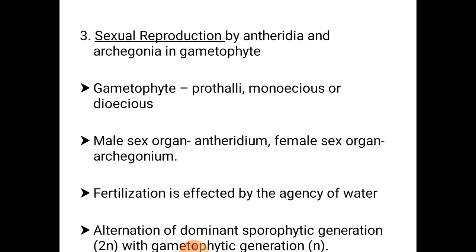Fertilization is effected by the agency of water. As a result of fertilization, a diploid zygote is formed which gives rise to a sporophytic plant. There is a regular alternation of the dominant sporophytic generation with the gametophytic generation. The sporophytes and gametophytes are dissimilar in their structure and functions; therefore, the life cycle is called heteromorphic alternation of generation.